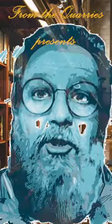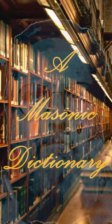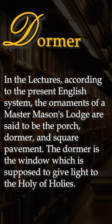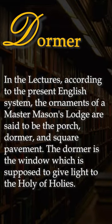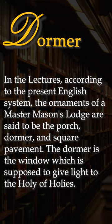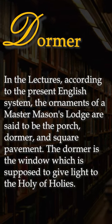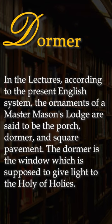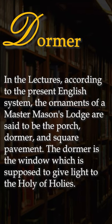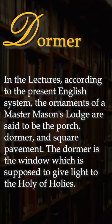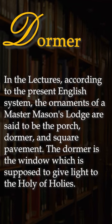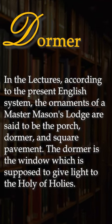From the Quarries presents a Masonic Dictionary. In the lectures according to the present English system, the ornaments of a Master Mason's lodge are said to be the porch, dormer, and square pavement. The dormer is the window which is supposed to give light to the Holy of Holies.